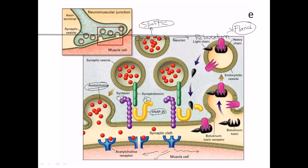Now, what happens when botulinum toxin is injected into the body? Botulinum toxin is an exotoxin made up of two subunits — subunit A and subunit B. Subunit B is the large subunit responsible for binding, and subunit A is the small active subunit. The botulinum toxin goes and binds with botulinum toxin receptors on the axon terminal using its large B subunit. These are normal receptors found on the surface of host neurons.